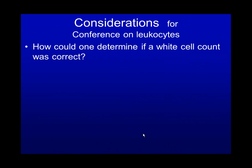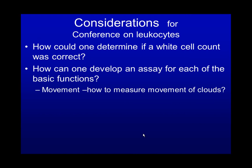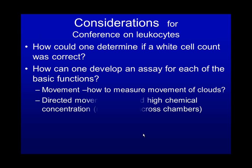How could one determine if the white blood cell count is correct, or whether cells are being produced? How can one develop an assay for each basic function? Movement is one — how would you measure the movement of cells? For example, you can use a microscope to try to measure the movement of cells.